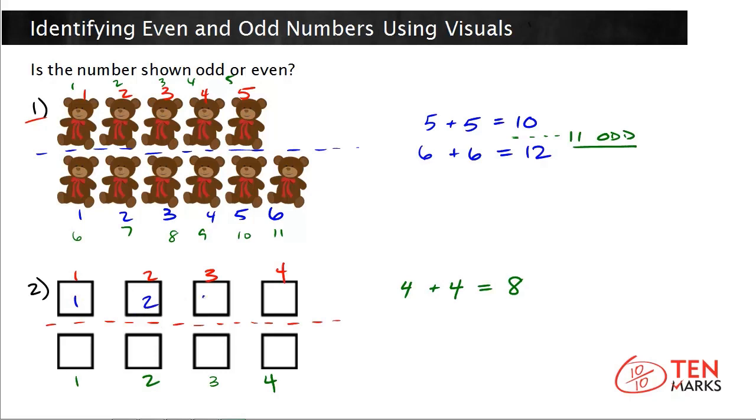And I'm going to count the total number of squares in blue. 1, 2, 3, 4, 5, 6, 7, 8. And this is the doubles fact for 8 which means 8 is even. So there are an even number of squares in this visual. Let's solve one more problem together.